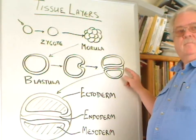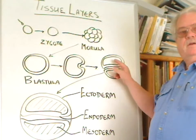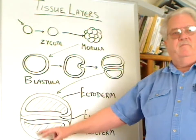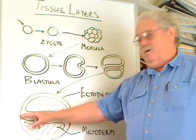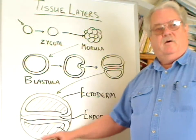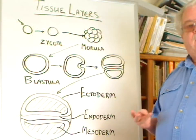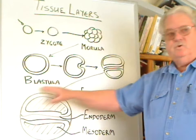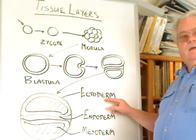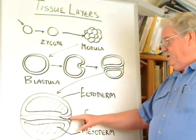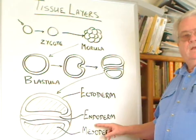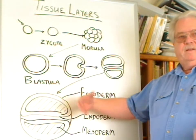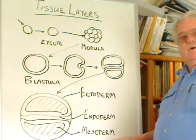Then some cells will start to migrate from this initial opening out into the hollow area of the ball, filling it up. We now have a very early embryo with the primitive gut running through what is now a fairly solid ball, giving us three kinds of tissue: the outer tissue called the ectoderm, meaning outer skin; the inner tissue lining the gut called the endoderm, or inner skin; and the cells that migrated into the middle called the mesoderm, or middle tissue.